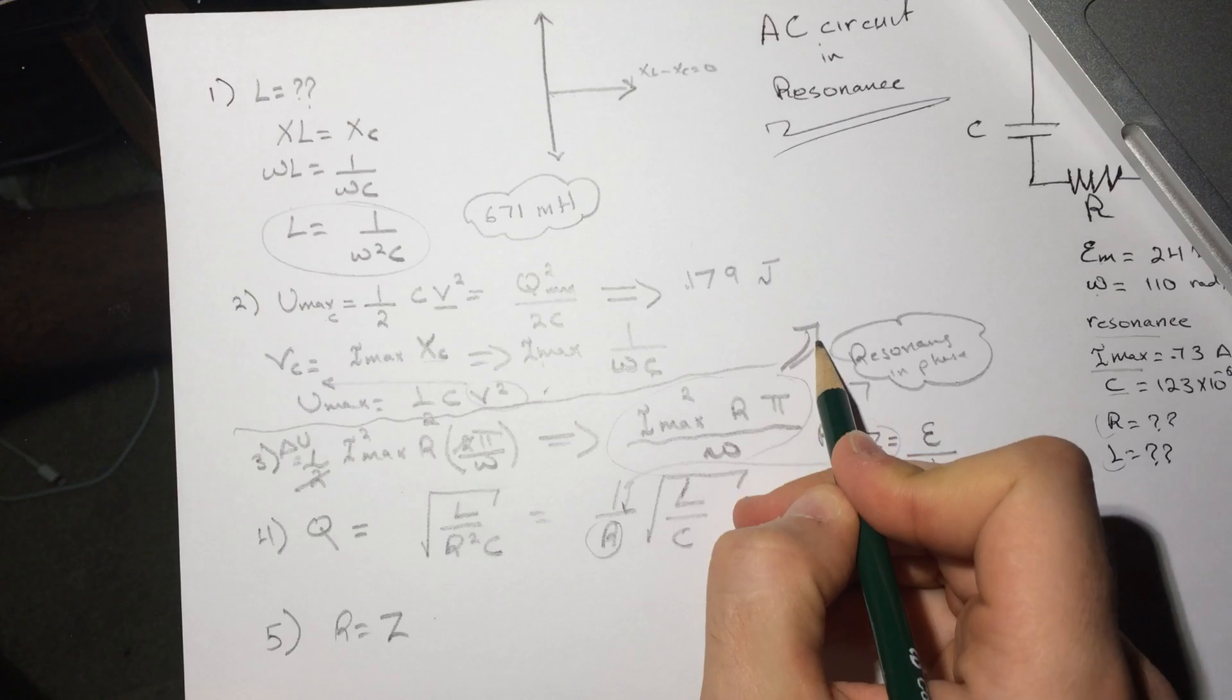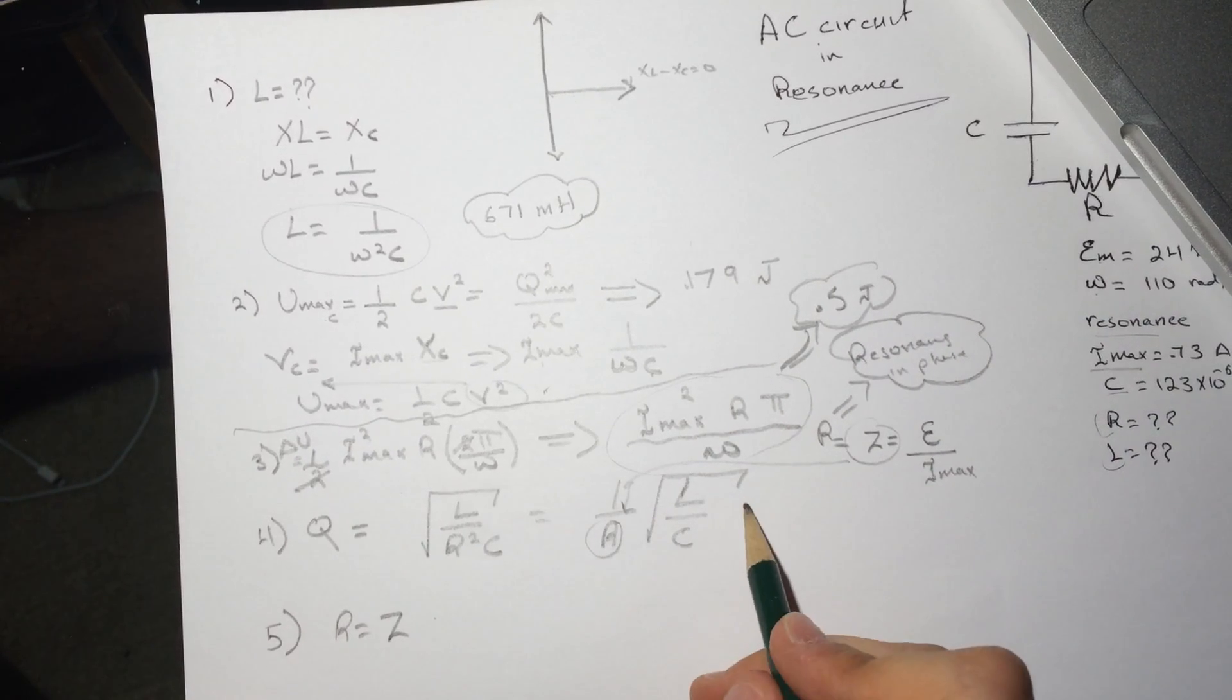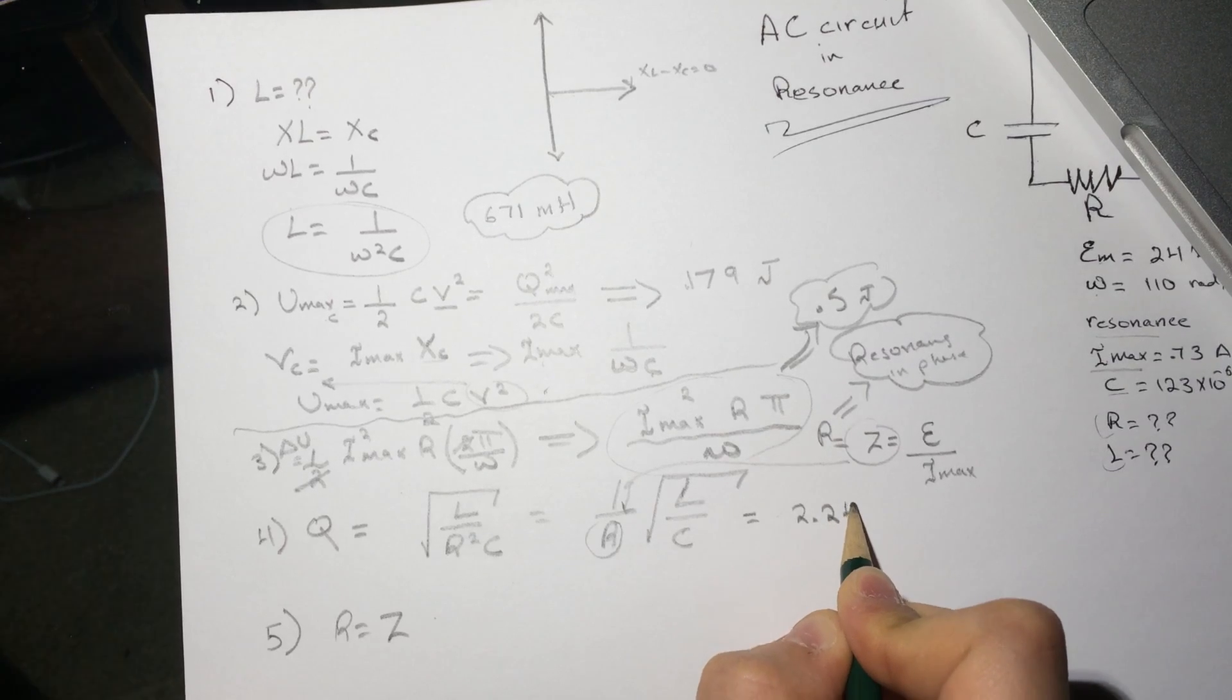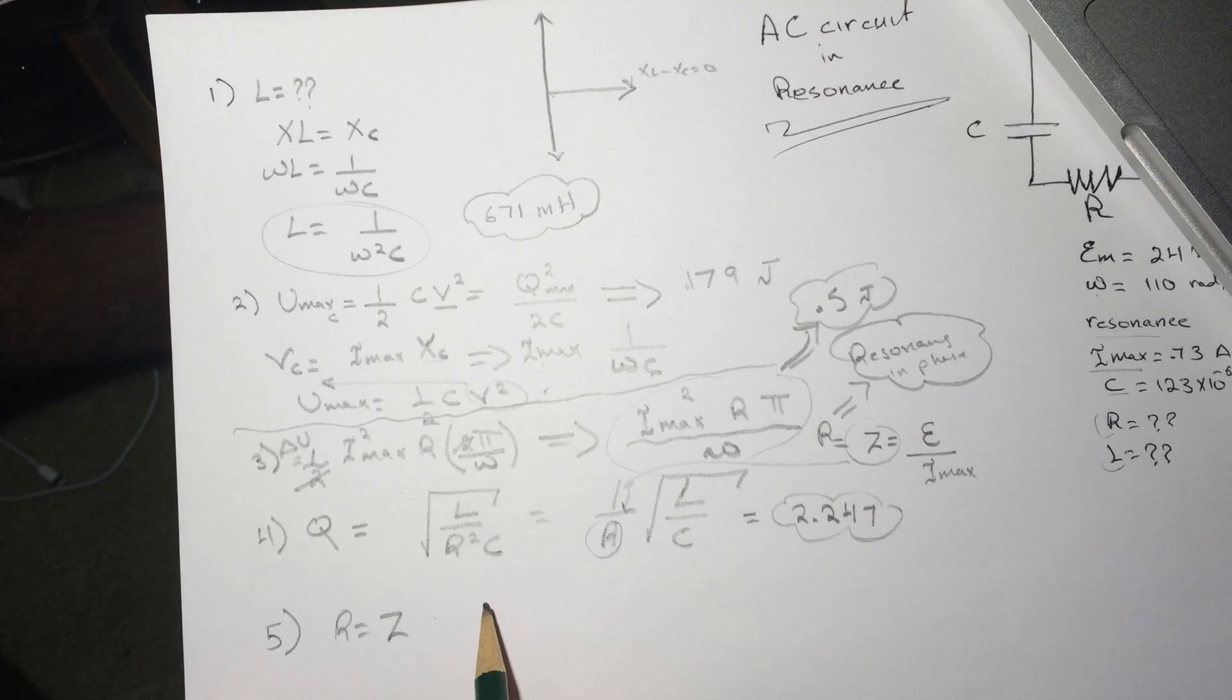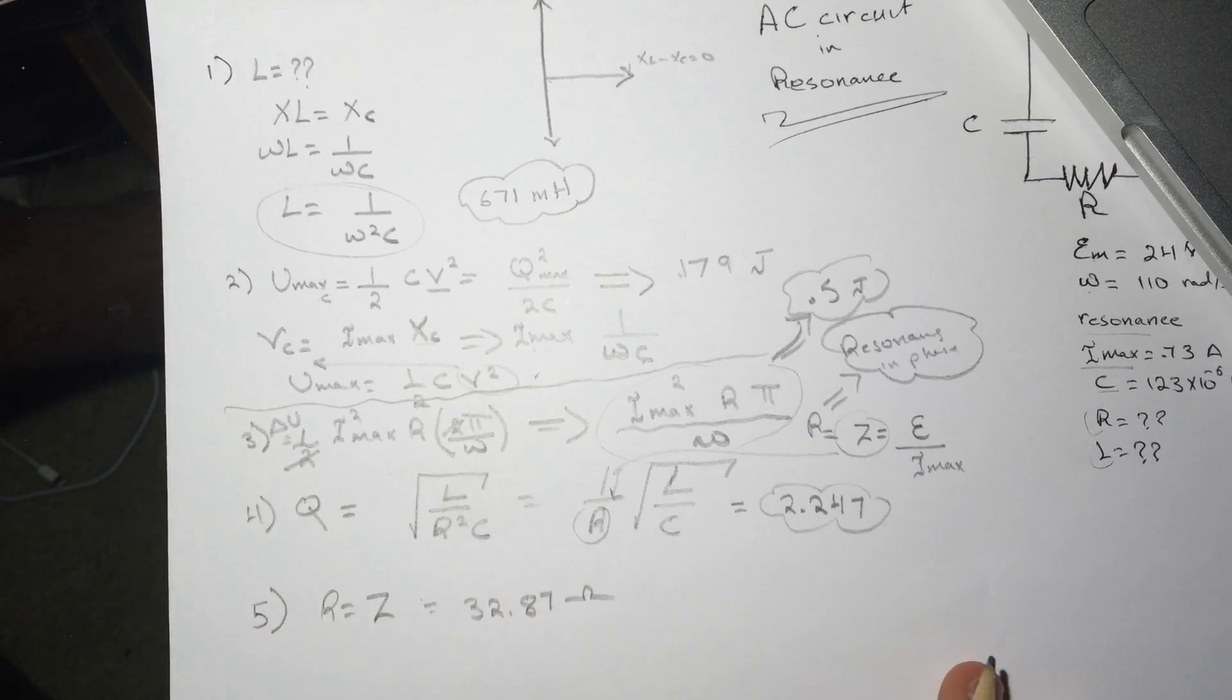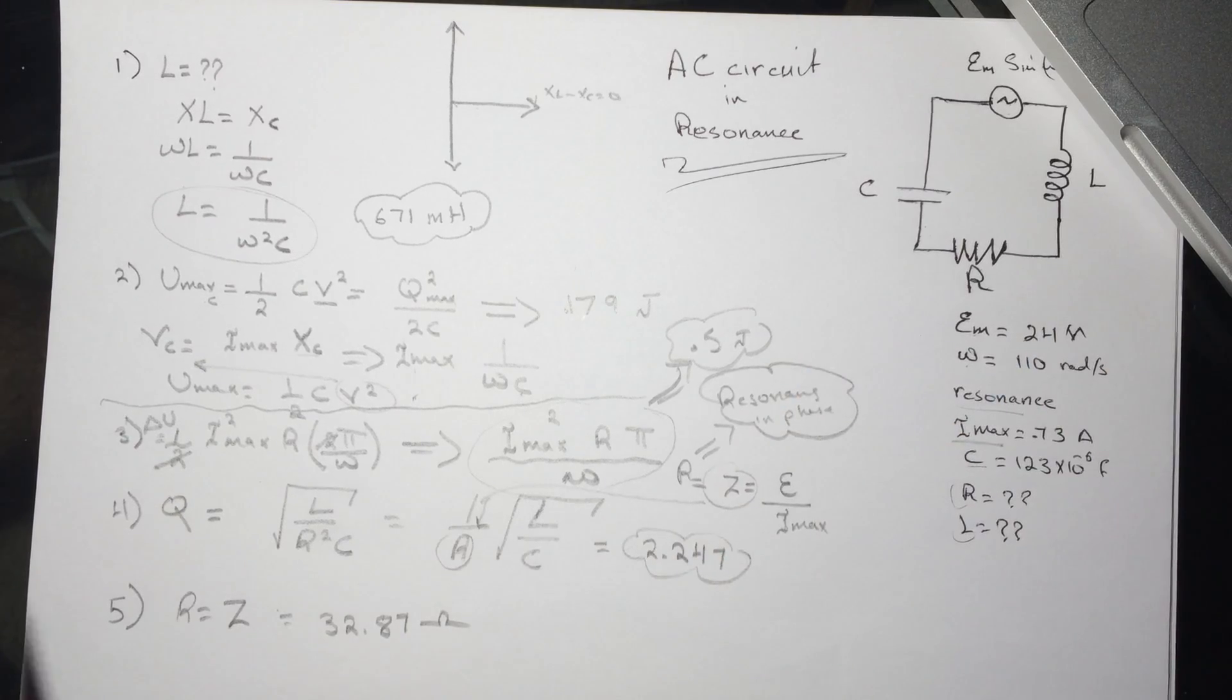For number four, the quality factor, I got 2.247. And for number five I got 32.87 ohms. This was a simple one. I hope it helped you and good luck.